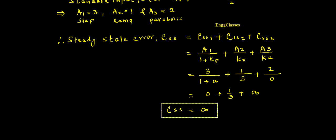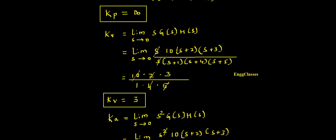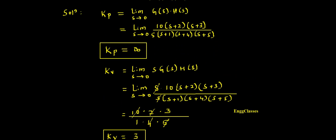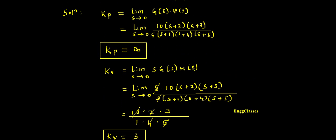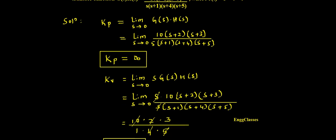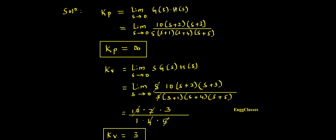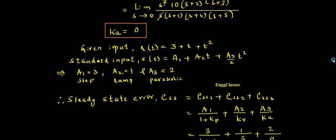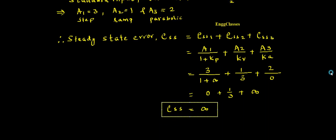So this is how we find the three parameters Kp, Kv, Ka, and lastly steady state error. This is one of the easiest numericals on this topic. I hope you have understood. I have explained everything step by step, and if there are any doubts please let me know in the comment section. Thank you so much for watching.